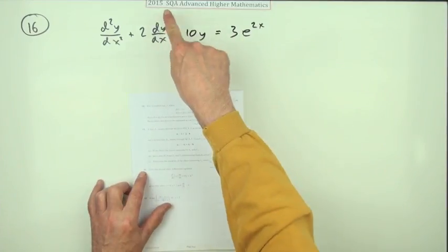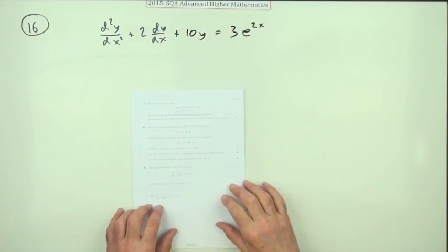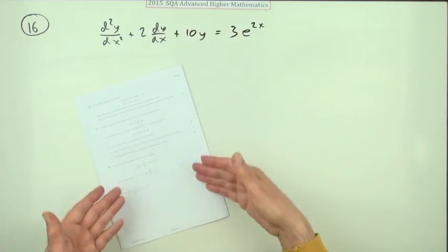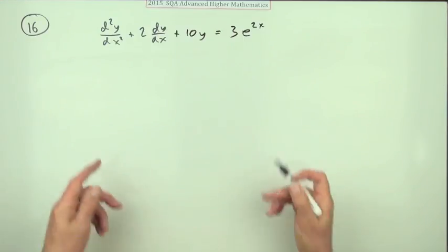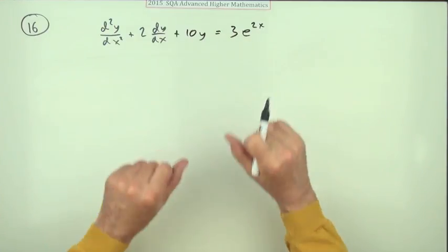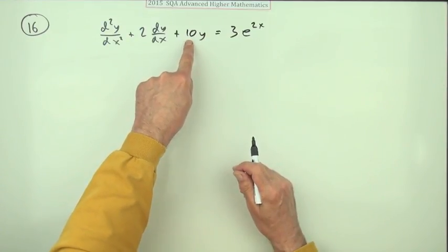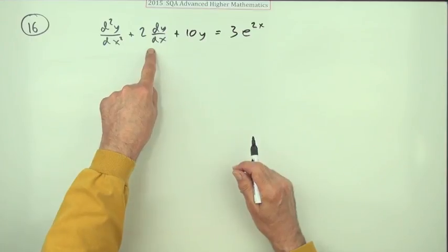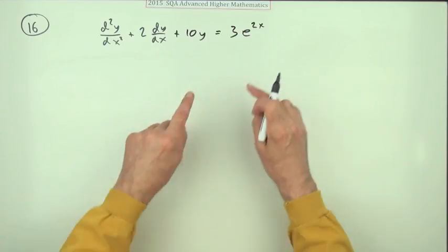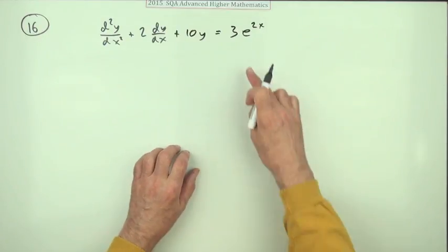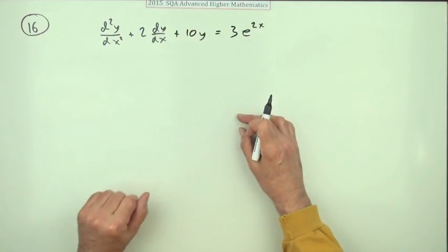So number 16 from the 2015 Advanced Higher. There we go, a second order differential equation, 10 marks. Should be nice and straightforward as long as nothing nasty turns up. Usually with a big positive coefficient here that indicates a negative discriminant which will give you sines and cosines, which if you had sines and cosines on this side can turn a bit nasty on you, but you don't have that there so this should be okay.